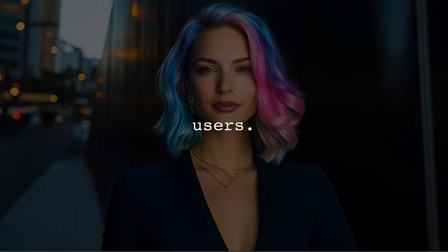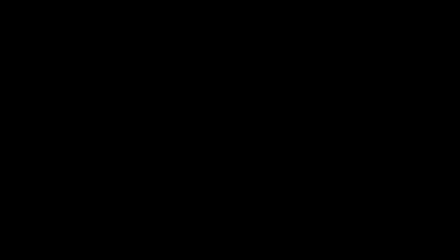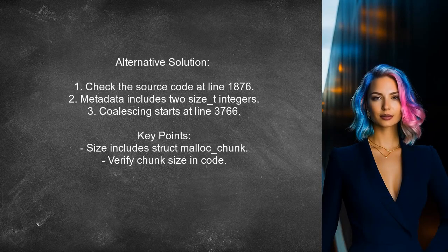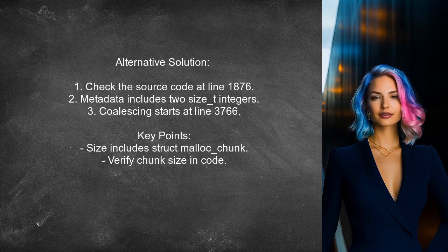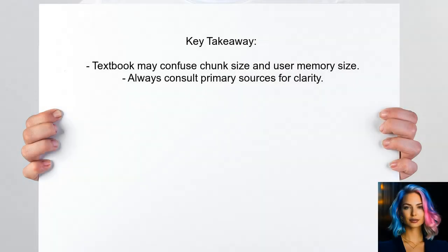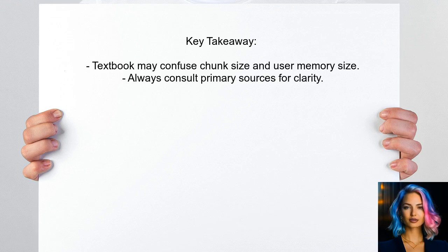This user suggests checking the source code of DLMALOC to understand how it coalesces chunks. They point out that the metadata consists of two size_t unsigned integers, which include the size of the struct itself. The coalescing process starts at a specific line in the code where the size variable tracks the chunk size, including metadata. The user confirms that the textbook's interpretation is incorrect, as it confuses chunk size with the user-allocated memory size, emphasizing the importance of consulting primary sources for accurate understanding.